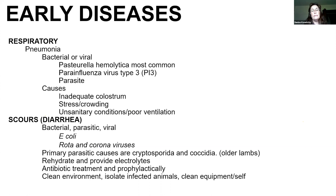Scours can be caused by bacterial, viral, or parasitic agents. We don't have some of the vaccines for sheep that we do in cattle, but I have had small ruminant people use E. coli and rotacoronavirus vaccines from cattle successfully in the small ruminant world as well. Navel or joint ill — we can see this shortly after birth, generally associated more with navel ill, and we can also see it after processing, castration, and tail docking — anything that opens the door for bacteria to gain entrance. Environmentally, make sure when you're performing these procedures that you're being as clean as possible in a clean environment, and that lambs are healthy before processing.